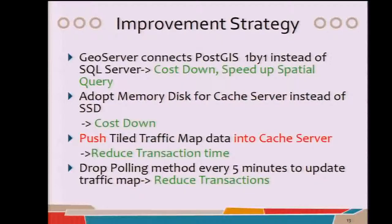We suggested a new strategy to our customer. We persuaded them to use PostGIS again, because it provides faster spatial query functions. We designed GeoServer to connect to PostGIS one-to-one instead of SQL Server. The total size of tiled traffic map data across all ten zoom levels was less than four gigabytes — meaning the data size was not that big. So to reduce cost and speed up data access, when adding cache servers, we chose memory disk instead of SSD. Furthermore, we changed the system to push tiled traffic map data into the cache server.